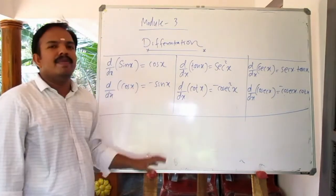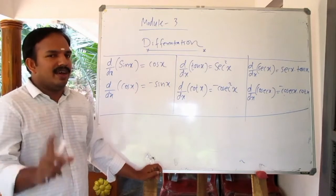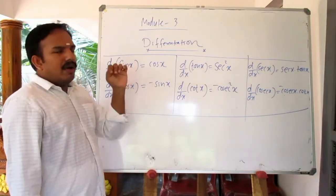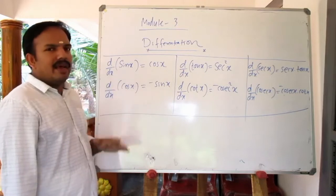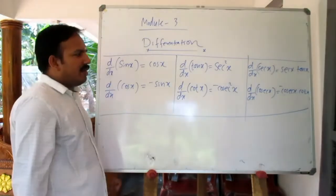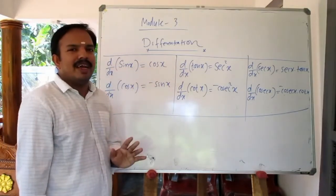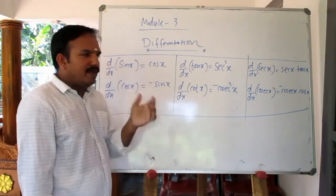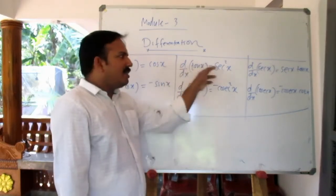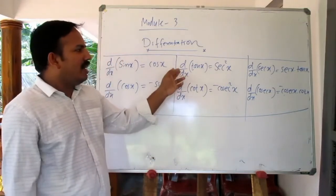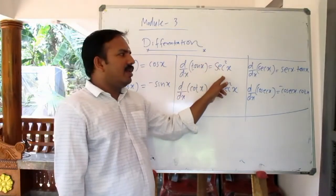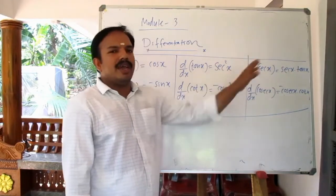In trigonometric differentiation, the 'co-' functions carry a minus sign. The derivative of sin x is cos x, and the derivative of cos x is minus sin x. Similarly, tan x and cot x, sec x and cosec x follow the same pattern — the co-functions are minus in differentiation.